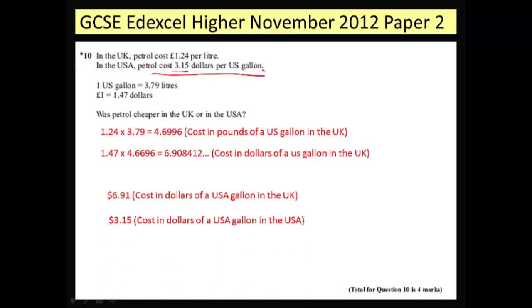So the cost in dollars of a US gallon bought in the UK is $6.91, and bought in the USA is $3.15. The clear winner here — and I need to state my final answer — is the USA.